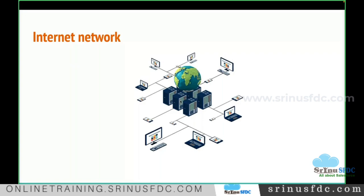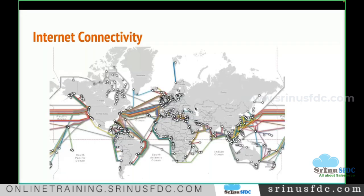Technically the internet is connected through wires. Even though we use Wi-Fi at home, somewhere there is a wired connection. There are many cables under the oceans. The internet service provider has a connection through one of these ports. So when you open a request from India for YouTube, the request goes to the YouTube server, which might be in the US or another country, and it shows the information.